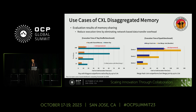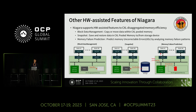In addition to these two use cases, we are actively investigating hardware-assisted features to enhance CXL disaggregated memory system efficiency. Niagara supports block data management, which reduces data migration overhead by moving or copying data within CXL disaggregated memory. This could be useful for scenarios like VM live migration, and we are still exploring other use cases.